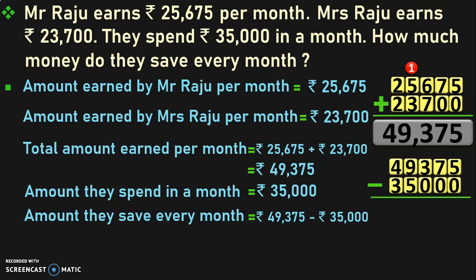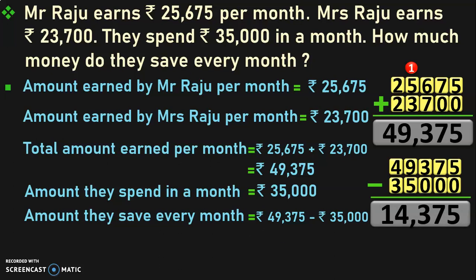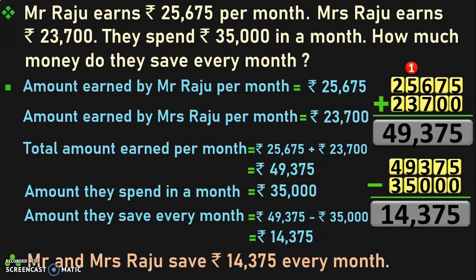Begin the subtraction from the ones place. 5 minus 0 is 5. 7 minus 0 is 7. 3 minus 0 is 3. 9 minus 5 is 4. And 4 minus 3 is 1. So, the answer is 14,375, which is the amount they save every month. Therefore, Mr. and Mrs. Raju save Rs. 14,375 every month.